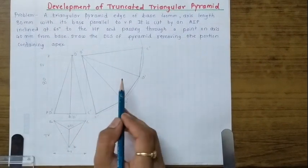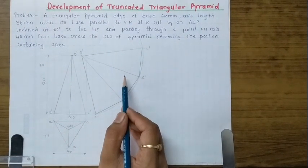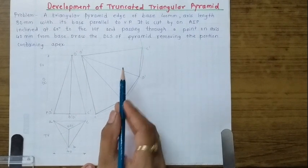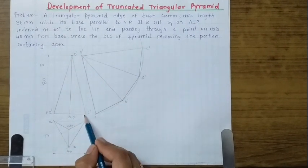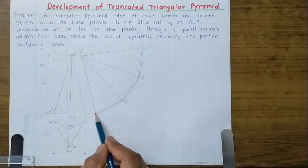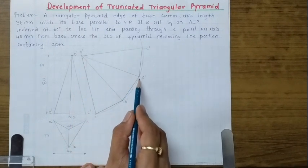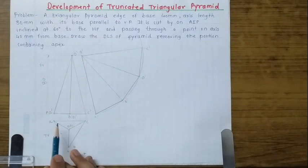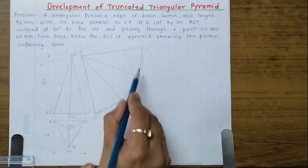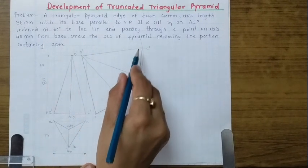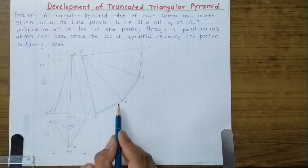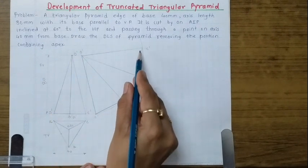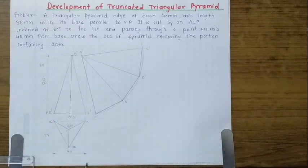To summarize the second step: draw a line parallel to the generator equal in length, then mark arcs at 40 mm spacing for the base edges, join those points to the apex, and connect them with straight lines. This gives the complete developed surface for the whole pyramid.